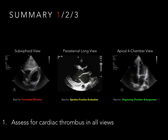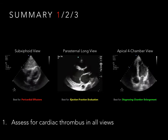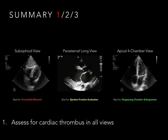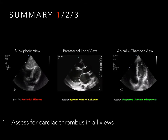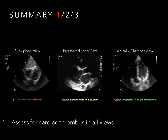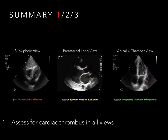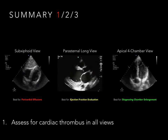Let's summarize. Take-home point number one: assess for cardiac thrombus in all views. Lodged clot in the right heart should immediately make you think about a large PE. These patients may benefit from IR or surgical consultation for catheter-directed thrombolytics or thrombectomy.